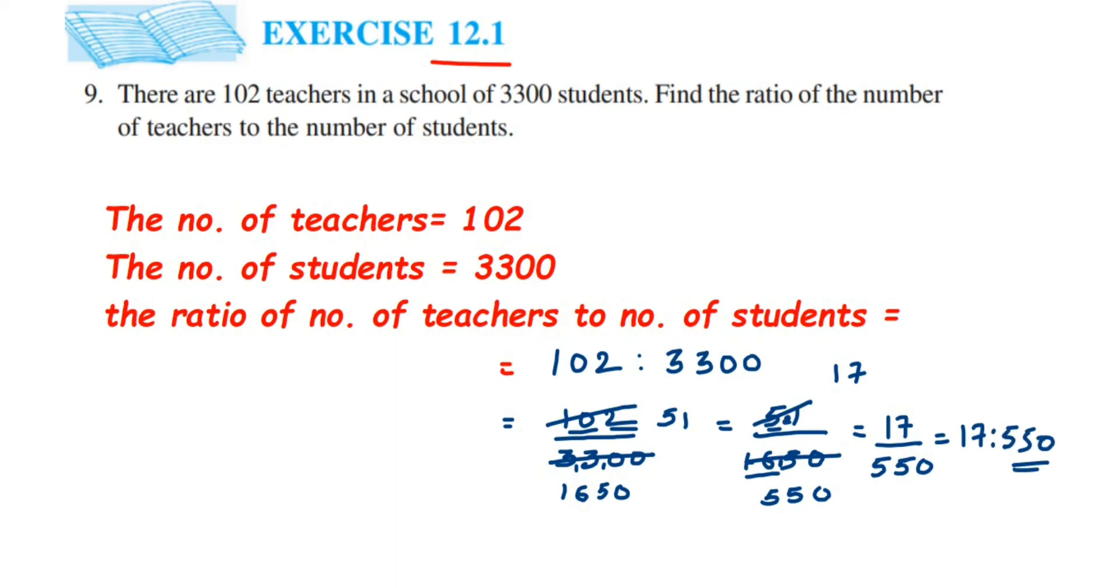That's it. I hope it's clear. In case you don't know how to do the cancellation, you can divide the numbers. You can divide 102 by 2 and you will get 51. You can divide 3300. Normal division, how you do? Just divide the number. You will get this answer.